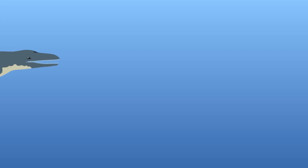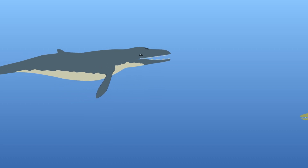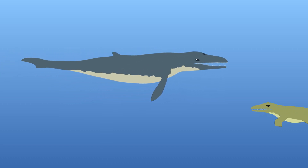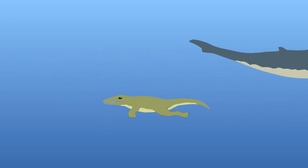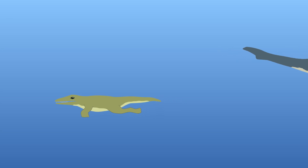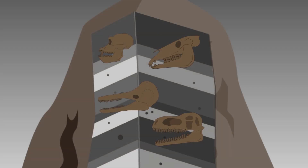When the first fossils were discovered, it was assumed that they were the remains of animals and plants that were still in existence. However, as more discoveries were made, it became apparent that the remains were unlike any animals walking the earth at that time, and that the deeper within the rock strata the fossils were, the more unlike modern organisms they became.